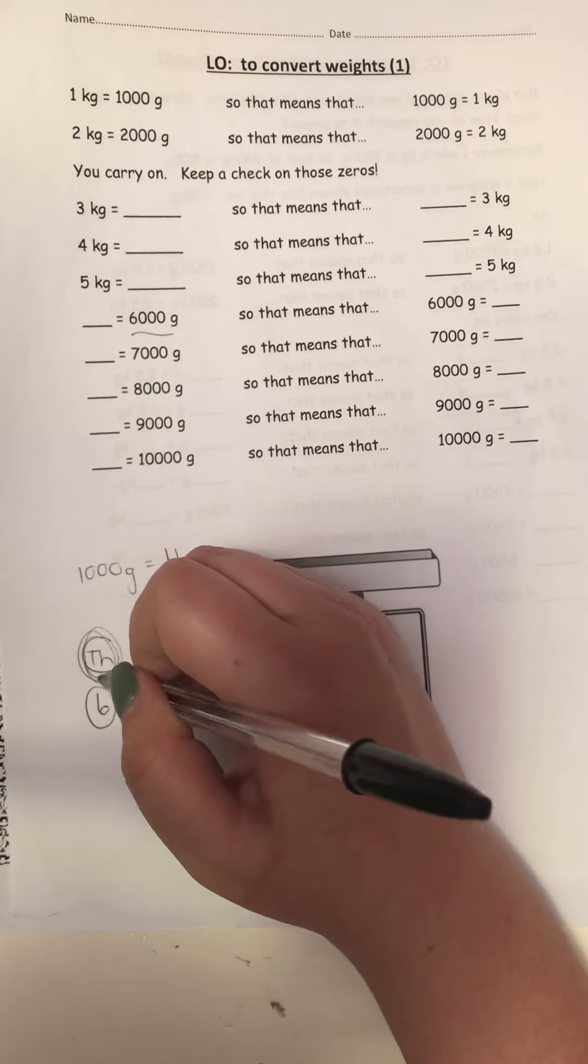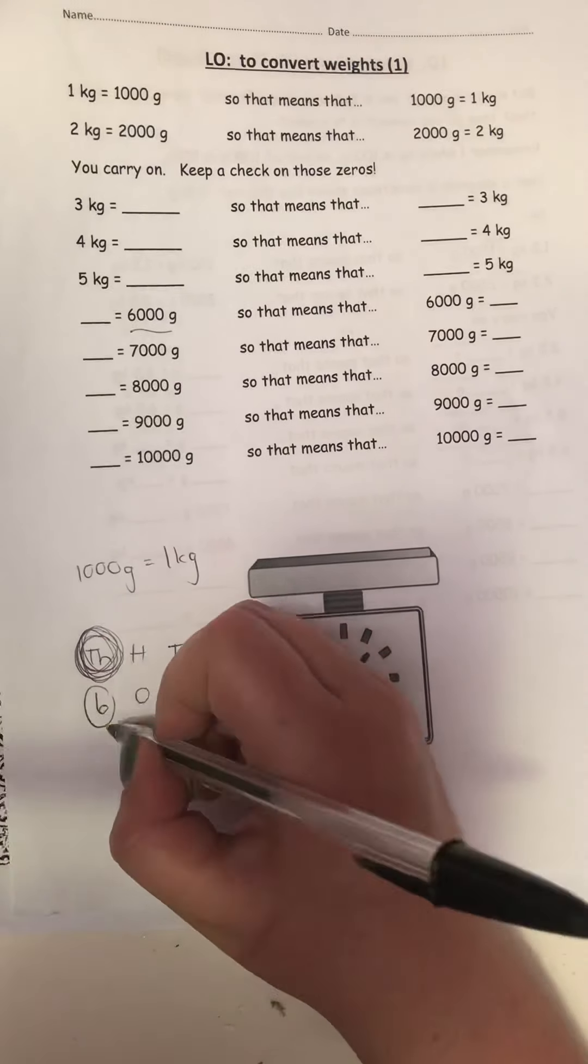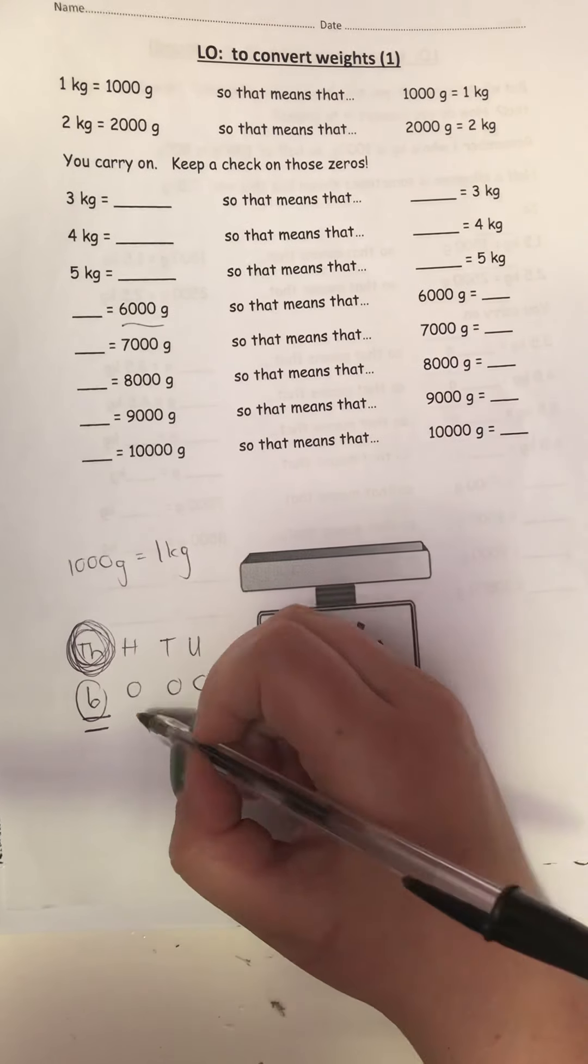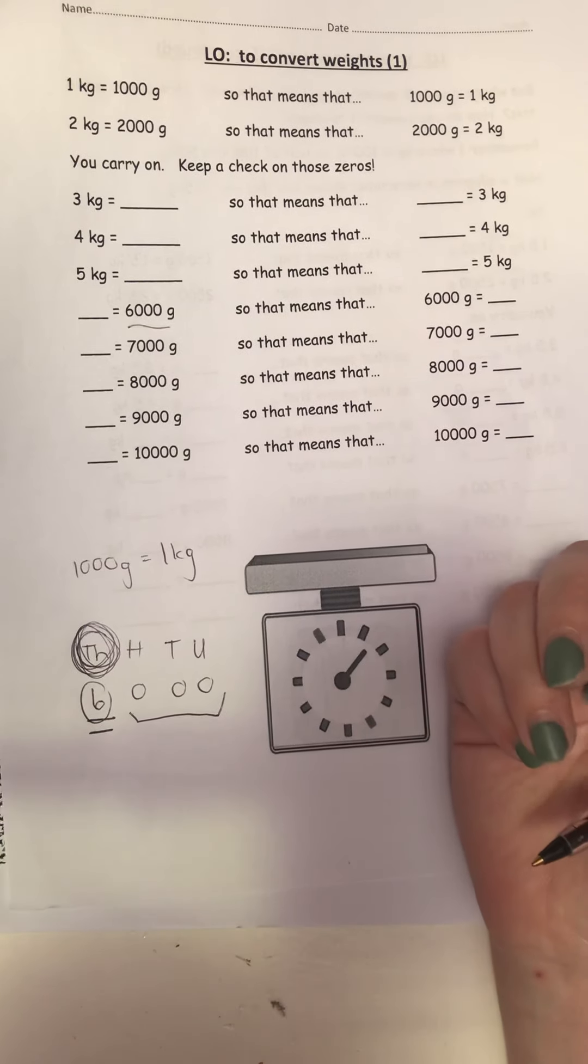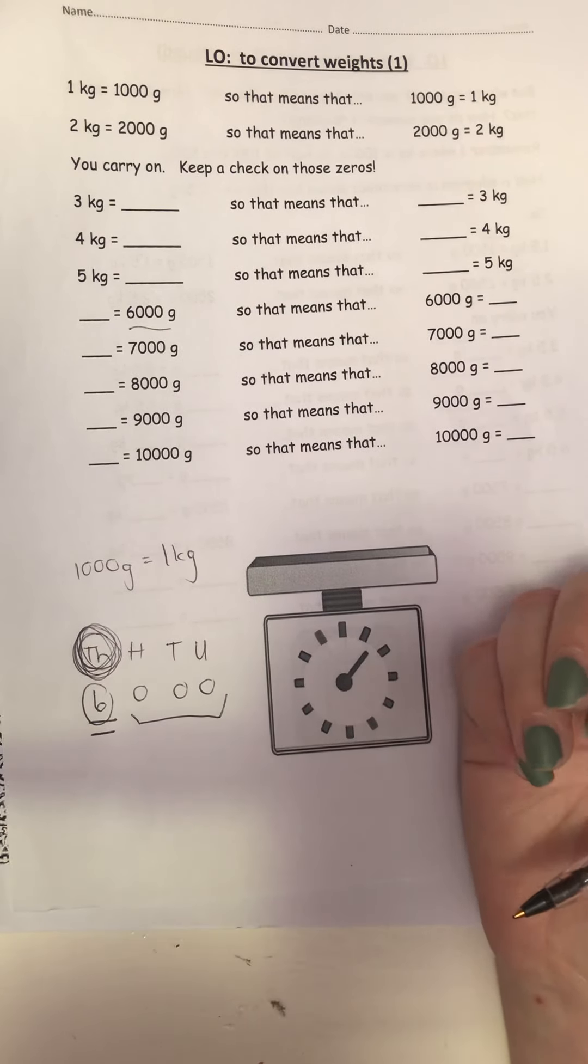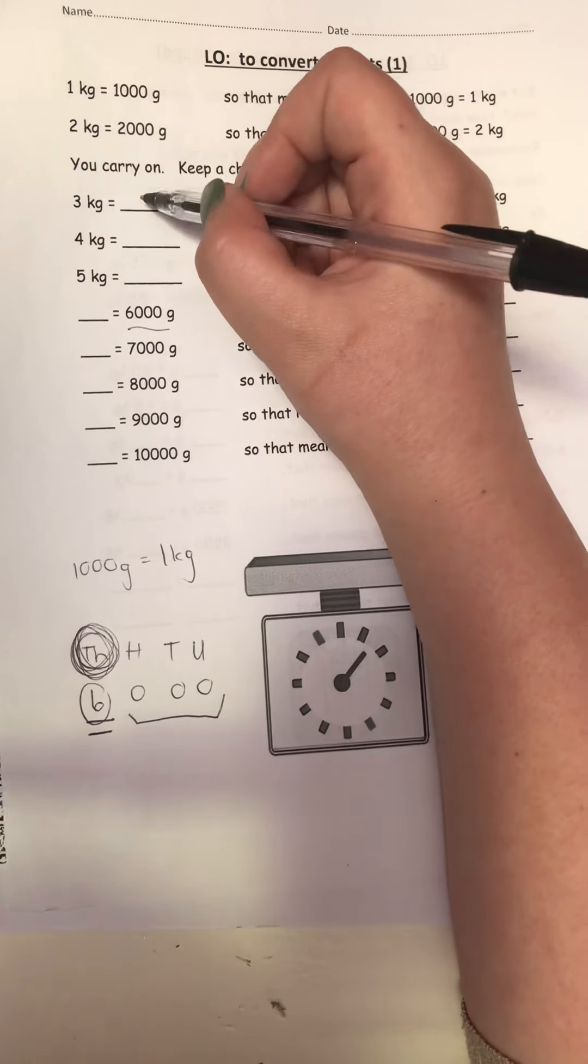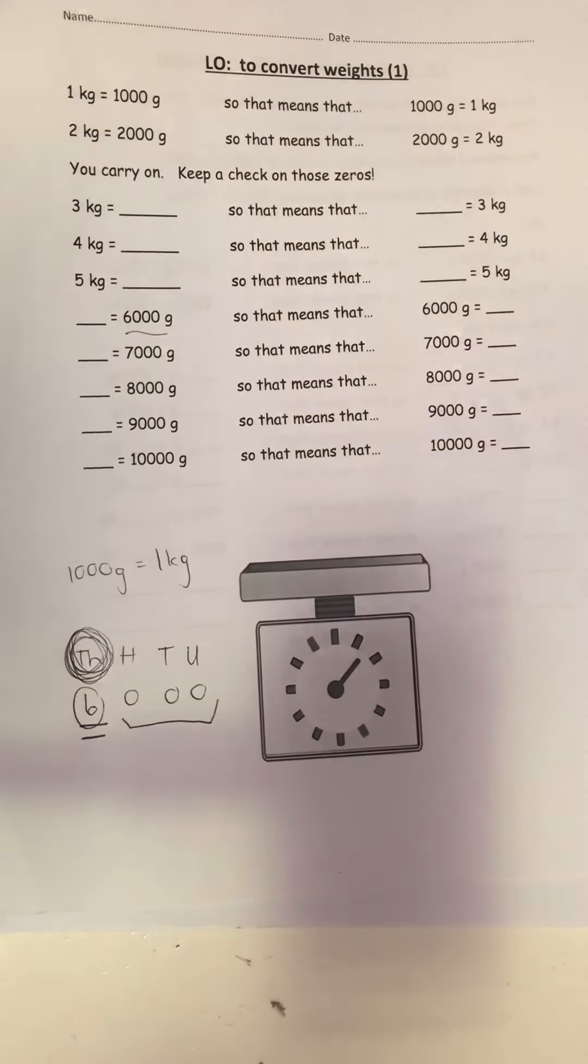Whatever comes afterwards is grams. So keep that in mind. So 3 kilograms is 3,000 grams. 4 kilograms is 4,000 grams.